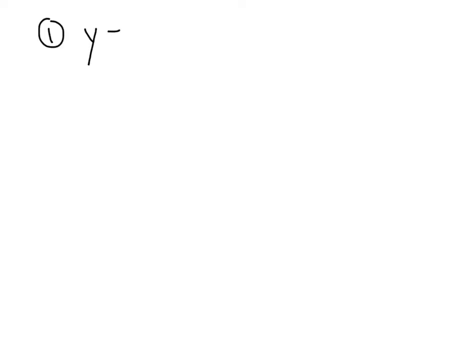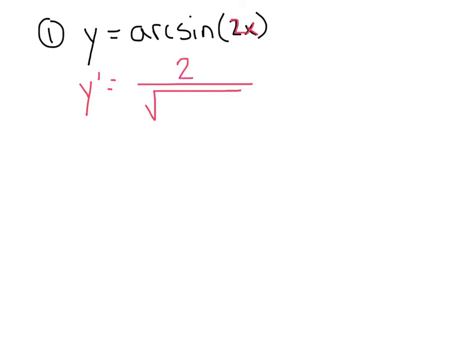Our first basic example: y equals arcsin(2x). Here u is 2x, so du is 2. Applying our rule, the derivative is 2 over the square root of 1 minus (2x)², which we can also write as 1 minus 4x². Both forms are equivalent and I would accept both.